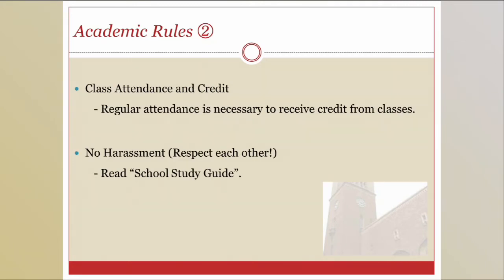The second academic rule pertains to attendance and credits. Your first priority is to attend your classes. The specific rules on attendance depend on each professor, so check each professor's syllabus carefully. As a general rule, most professors require students to attend at least two-thirds of total classes. Each Waseda course usually consists of 15 classes, meaning you can miss up to five. However, some professors may consider missing five classes too many and it will affect your grades, so keep in mind that attendance is very important.